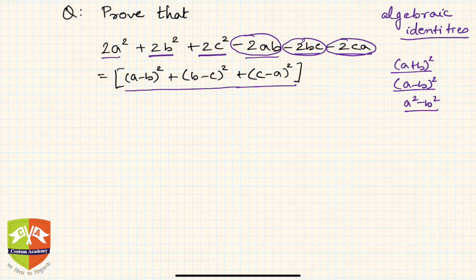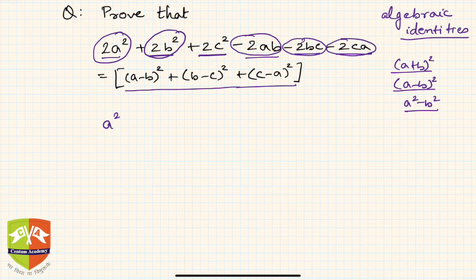Since twice ab appears, if I have an a² and a b² I can complete the square. There are two a² terms, so I take one a² and one b², then club them with the -2ab term. This gives us one full perfect square right away.